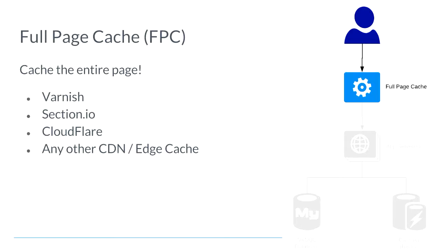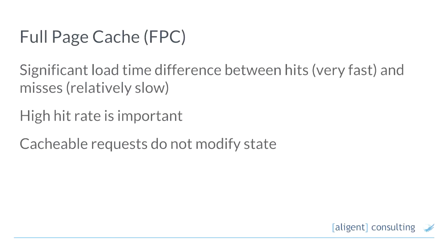We want to use full page cache and cache our results as much as we can. We need to be aware that there's a significant time difference between cache hits and cache misses, which are going to be considerably slower. Getting a high hit rate out of Varnish is very important — we want to serve as many pages from cache as we possibly can.